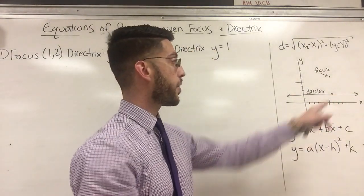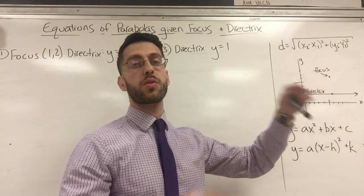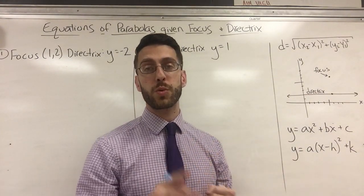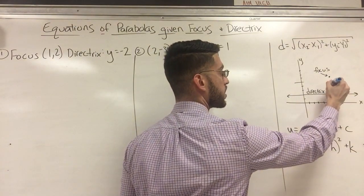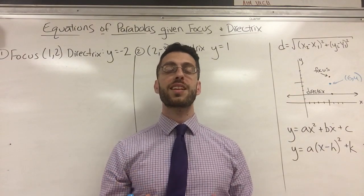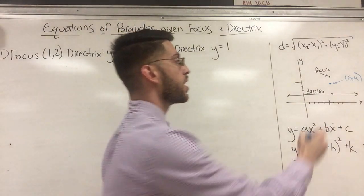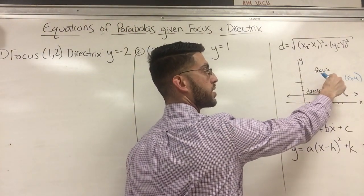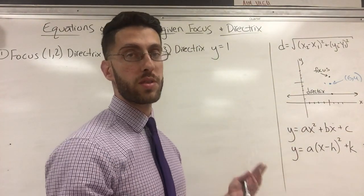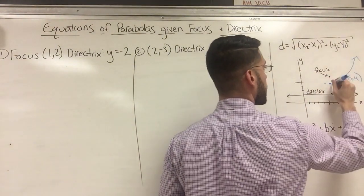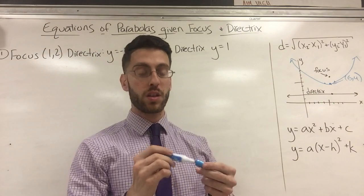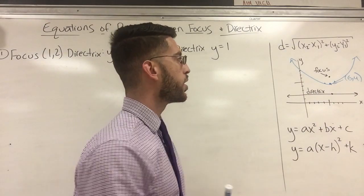Say the focus is at (6, 6) and the directrix passes through y = 2, so the point directly below the focus on the directrix is (6, 2). The midpoint: the middle of 2 and 6 is (2+6)/2 = 4, so the vertex is at (6, 4). But the definition says the set of all such points — so every point on the curve is equidistant from the focus and the directrix, opening up into a parabola shape.